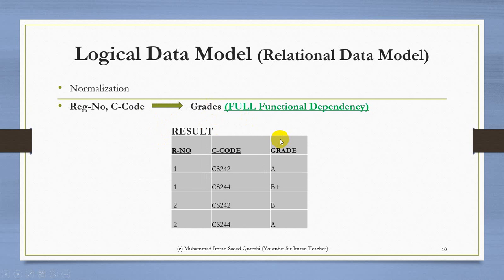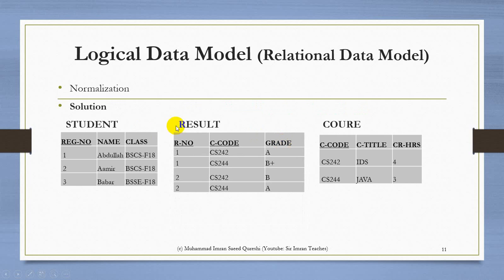We create a Student table with reg number as primary key and name and class as non-key attributes. We create a Course table with course code as primary key and course title and credit hours as non-key attributes. We create a Result table with reg number and course code as a composite primary key and grade as the non-key attribute.